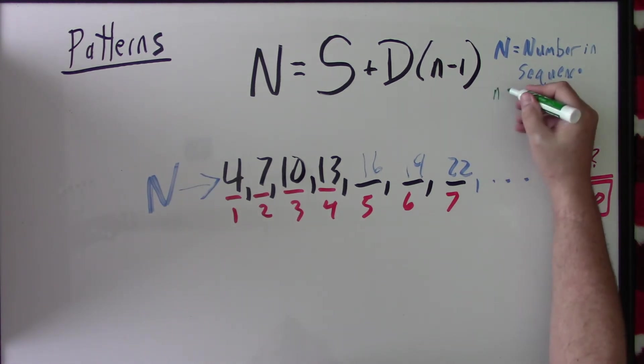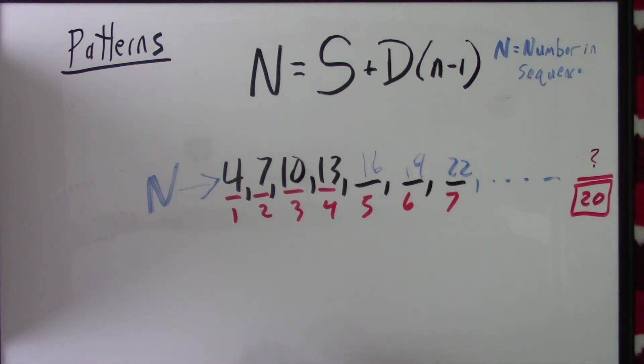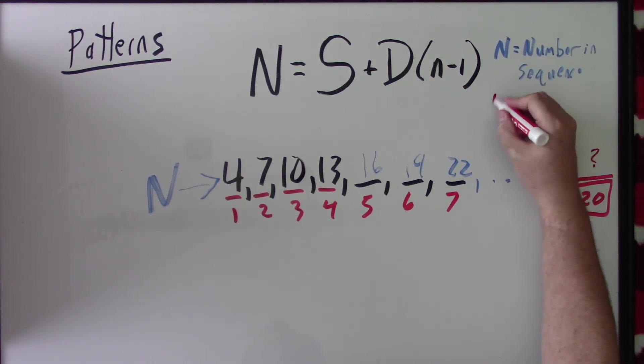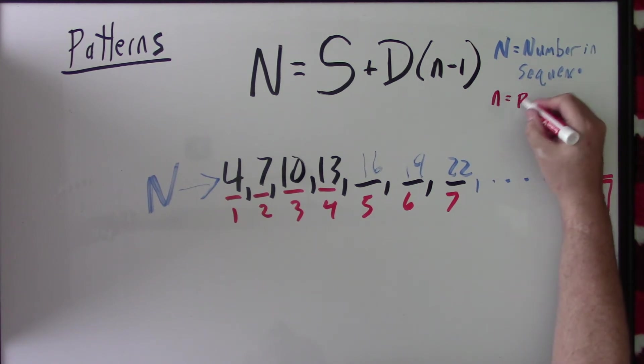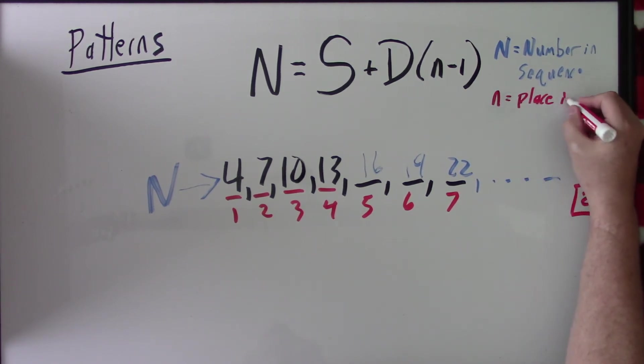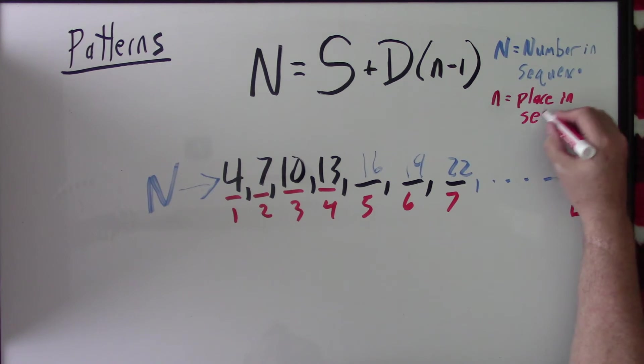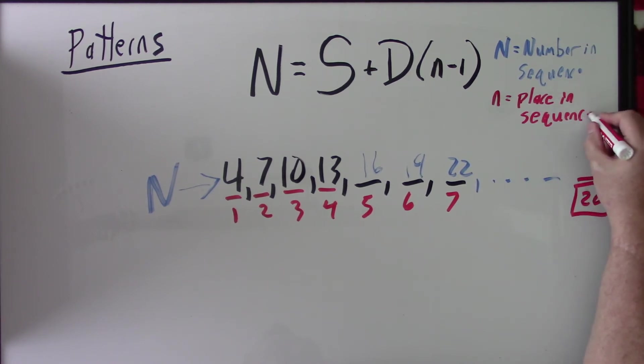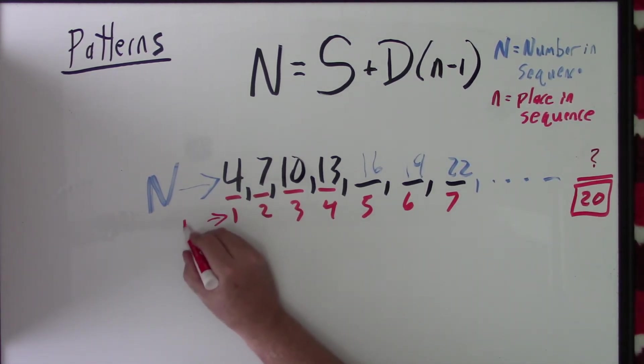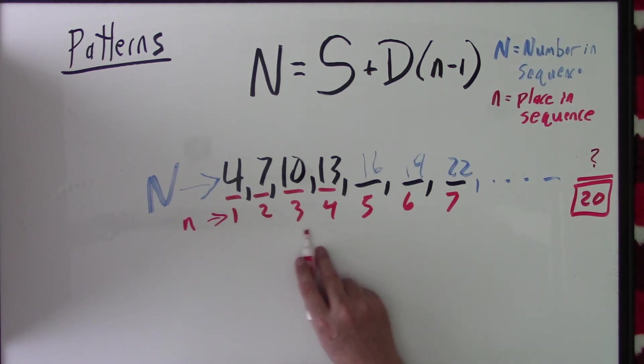Lowercase n, and I'm going to actually use red because that's what I wrote them in, is your place in the sequence. So it's the first number, the second number, the third number, the fourth number, the fifth number. So even though they're both numbers, one is you're doing a count, and the other, you're actually doing the number that you're manipulating.